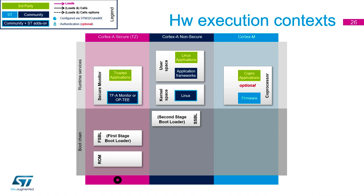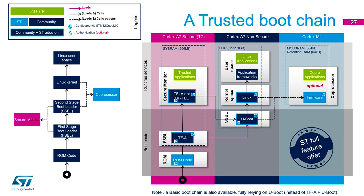The contexts on the diagram: the Cortex-M is optional on the right side; on the left, the secure context covers ROM code and first stage bootloader, then transitions to non-secure for the second stage bootloader, Linux kernel space, and main applications. Linking back to the earlier flow diagram: ROM code launches TF-A, then TF-A launches U-Boot, or you can launch OP-TEE and have OP-TEE launch U-Boot. Then Linux runs and, depending on your setup, either U-Boot or Linux can launch firmware into the M4.